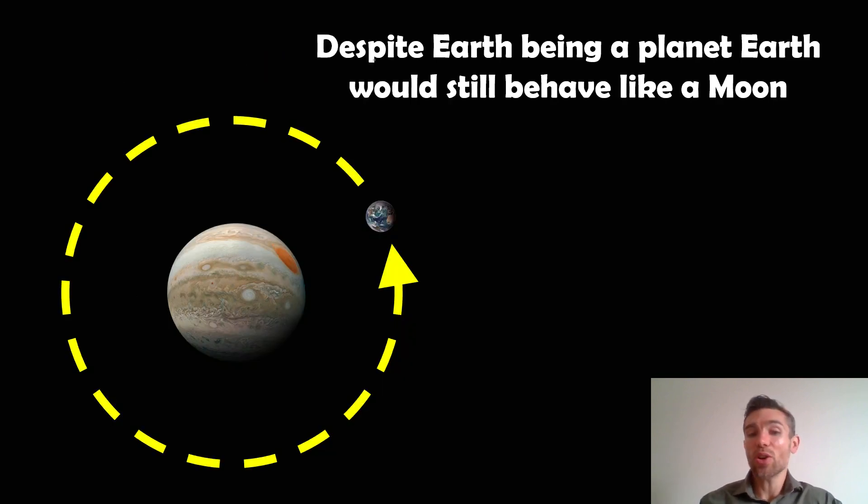So despite Earth actually being a planet, it's still going to behave like a moon, like dynamically on its orbit. You put it on an orbit around Jupiter, that's it. It's actually going to be a moon. It isn't going to be a planet anymore because the size difference is a lot smaller than Jupiter. So it actually behaves like a moon. It's a moon. That's it.